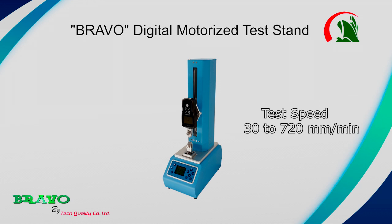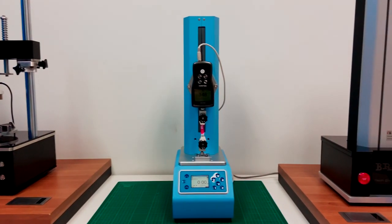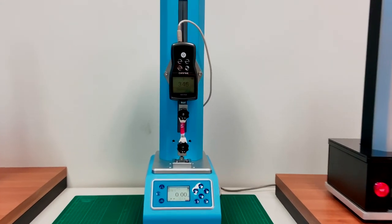30 to 720 mm per minute. Auto return: crosshead moves to the force set point or travel position.